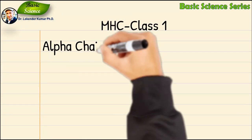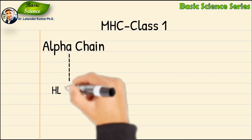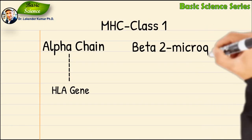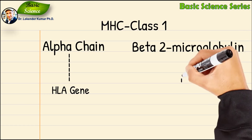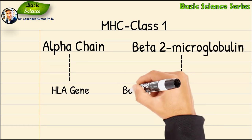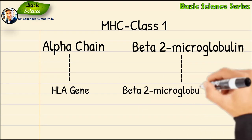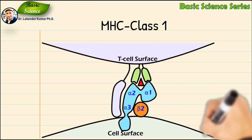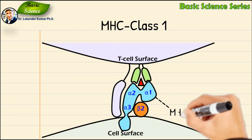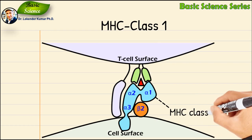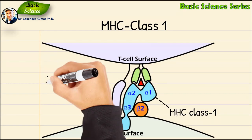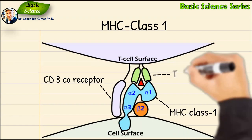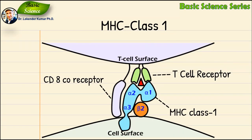The alpha chain is encoded by an HLA gene, while the beta-2 microglobulin unit is encoded by the beta-2 microglobulin gene. The MHC class 1 molecule complex interacts with the CD8 co-receptor and T cell receptor to recognize foreign molecules.